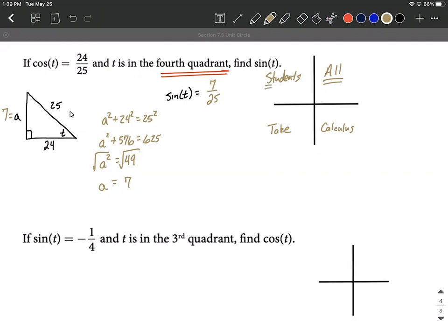In the second quadrant, only sine and its reciprocal cosecant are positive. In the third quadrant, tangent and cotangent, its reciprocal are positive. And then fourth quadrant, that's the one we're concerned with, only cosine and secant, its reciprocal, are going to be positive.